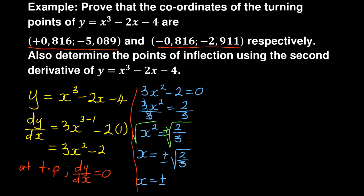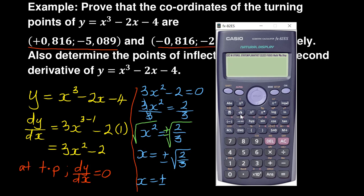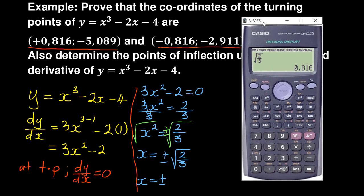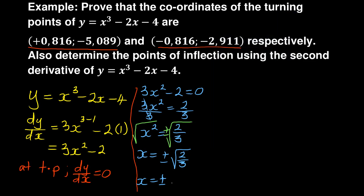Using a calculator to find the decimal value: the square root of 2/3 gives 0.8164. Rounding to three decimal places, that's 0.816. Remember it's plus or minus, so you have x = +0.816 and x = −0.816. You have already managed to prove the first part of the coordinates, which is plus or minus 0.816.